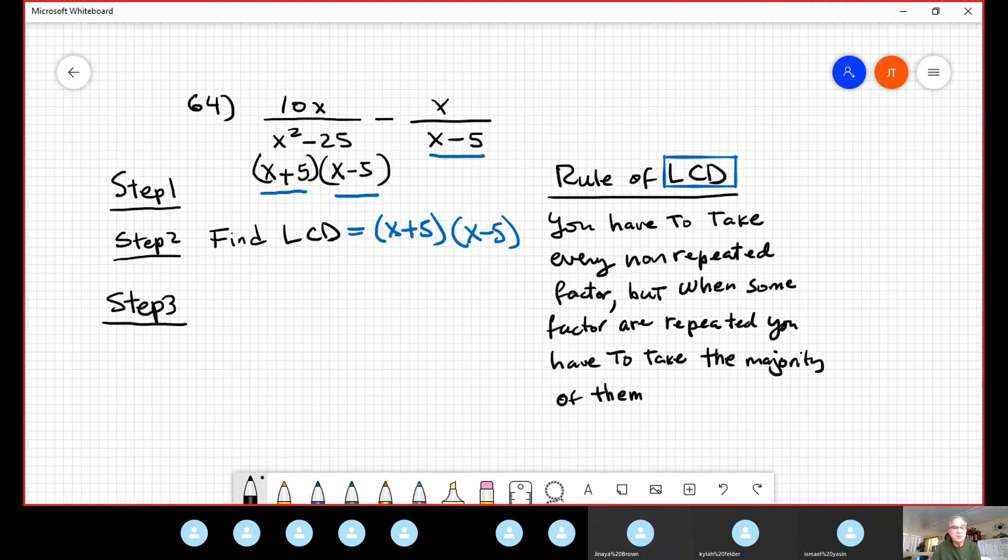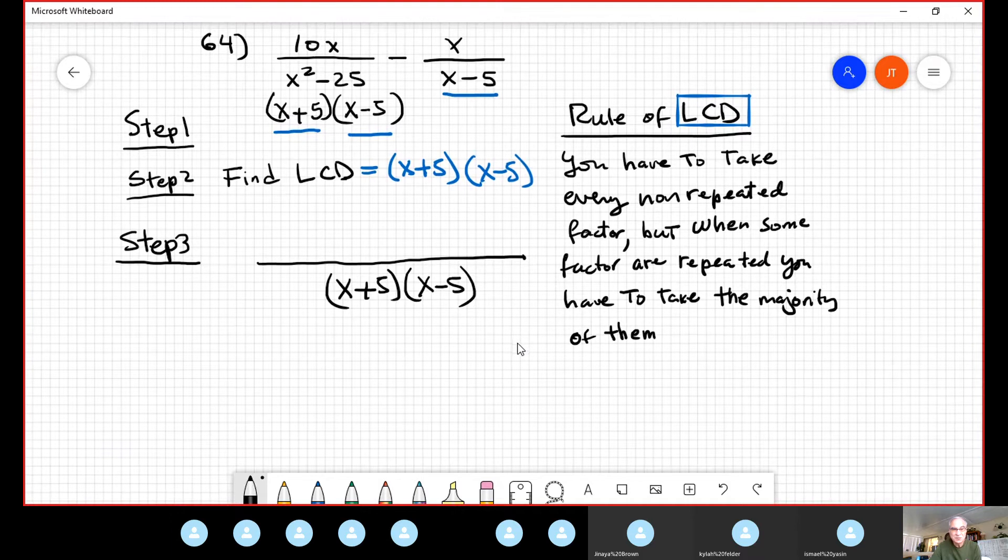Now, step three is condensing these two fractions that we have separately, into only one. Because you put in the denominator, the least common denominator. Now, there's a little bit confusing part. I know. How you determine the top part? Well, the top part is, you mentally, or on the piece of paper, you divide least common denominator, divided by denominator one, multiplication by the corresponding numerator one. The same, in the same fraction.